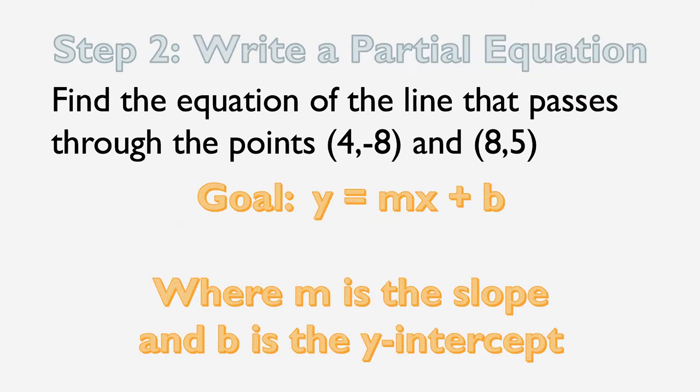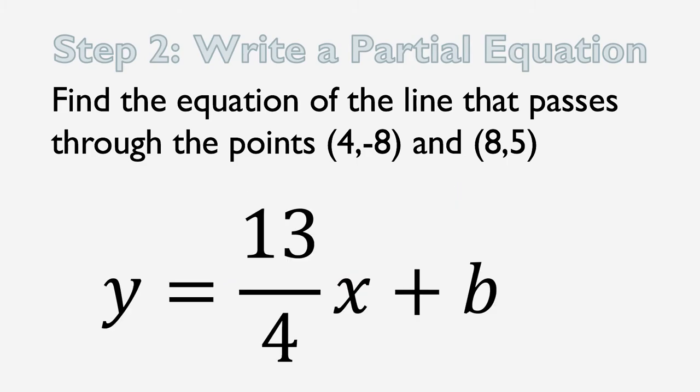Next up, we're going to write out a partial equation. So again, our goal is an equation in y equals mx plus b form, where m is the slope and b is the y-intercept. We now have the slope. So let's write out this equation, y equals mx plus b, plugging in the slope into the m-slot. So the slope is 13 over 4. We now have the equation y equals 13 over 4x plus b.